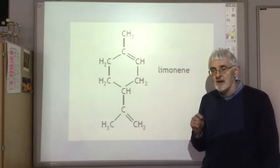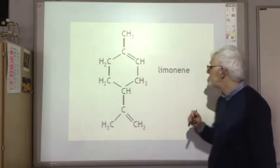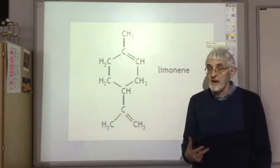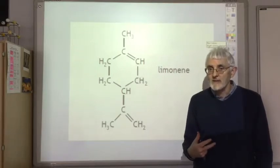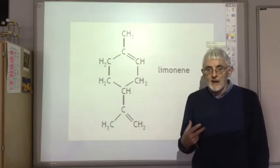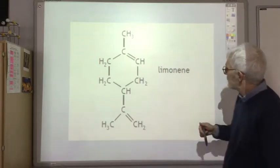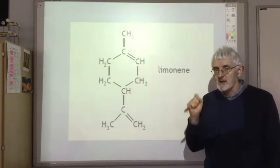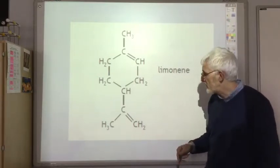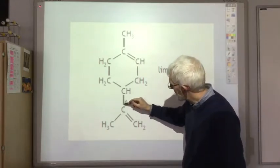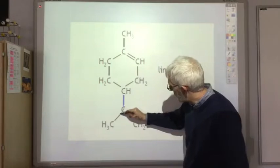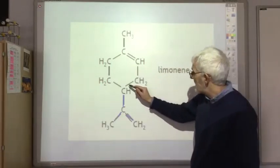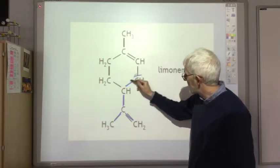Also, sometimes you're asked to circle an isoprene unit within the terpene. Your isoprene unit should contain five carbon atoms, but it can't just be any old five carbon atoms. If you remember what the isoprene unit looked like, there's always one carbon which is joined to three other carbons. Try and identify that carbon first of all. For example, here, this carbon is joined to one, two, three other carbon atoms, and then we add that one to make our fifth.